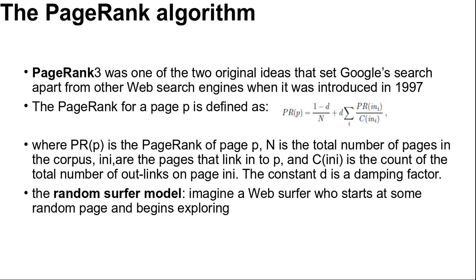What is a high quality site? One that is linked to by other high quality sites. The definition is recursive, but the recursion bottoms out properly. The PageRank for a page P is defined as: PR(P) = (1 - d) / N + d × Σ [PR(Ni) / C(Ni)], where PR(P) is the page rank of page P, N is the total number of pages in the corpus, and C(Ni) is the number of out-links from page Ni.